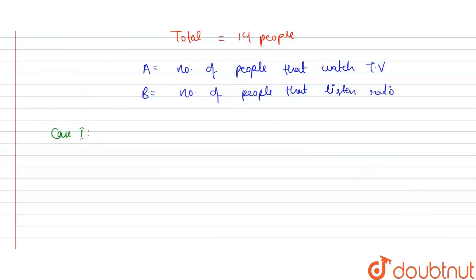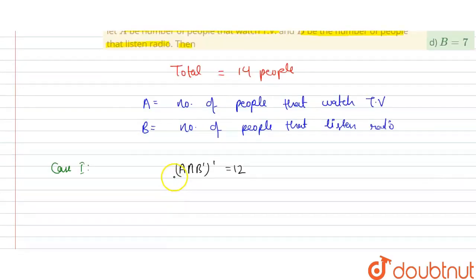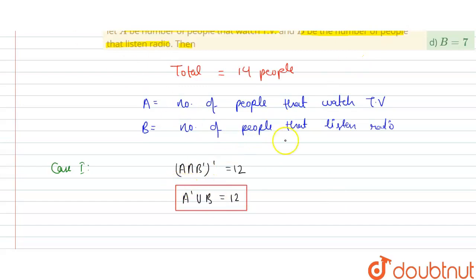In Case 1, the given expression is (A intersection B complement) whole complement equals 12. After solving this using De Morgan's law — converting complement of intersection to union — we get A complement union B complement equals 2. This is our first case, using the property that B complement's complement equals B.